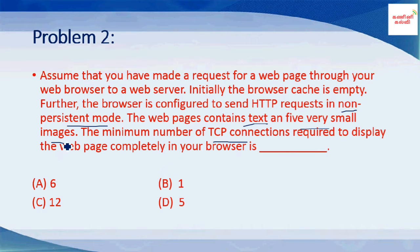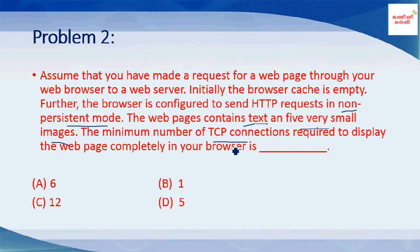In non-persistent mode, one TCP connection is used per request-response. Since the page has 1 text file and 5 images, that is 6 objects total. So the minimum number of TCP connections required is 6. The answer is option A.